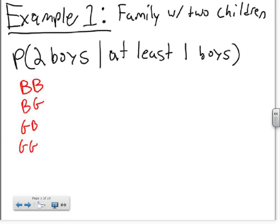They're all equally likely with the probability of one-fourth. Now if you let E be the event that a family with two children has two boys, which we're trying to find here, and F is the event that it was given that there was at least one boy,